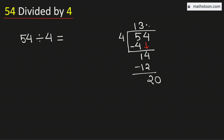Now we know that 4 times 5 is 20. Subtract, we get 0. As we have obtained the number 0, we will stop. Therefore 54 divided by 4 is equal to 13.5, and this is our final answer.